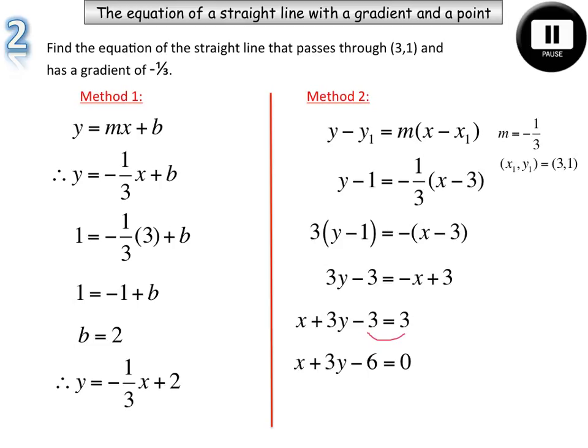So the equations look a little bit different. But one's in y equals mx plus b form, and the other one is in general form, ax plus by plus c equals 0. But you'll notice that they're the same equation, just in different forms. It doesn't matter how you specify your answer. If the question says give it to a specific form, well then you obviously do that. But in this case it doesn't, so either answer is acceptable.